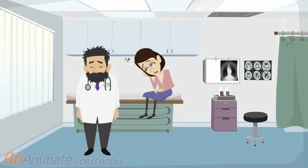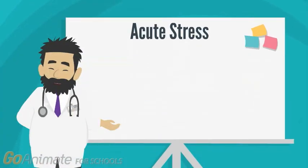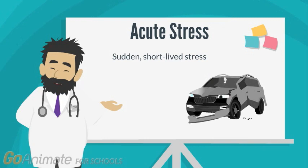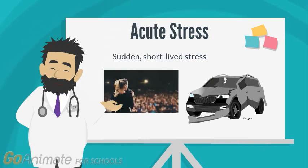Acute stress can result from specific events or situations that involve novelty, unpredictability, or a threat to the ego, and leave us with a poor sense of control. This on-the-spot type of stress can be good for you because the stress hormones released help your mind and body deal with the situation.